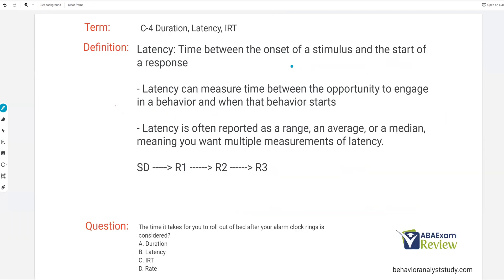Now latency and inter-response time. Starting with latency — these are probably the two most complicated continuous measurement procedures, and they're very closely related. They can be a little hard to internalize at first. Latency is the time between the onset of a stimulus — let's call that the SD — and the start of a response. Looking at our diagram, we have an SD, then response one, response two, response three. The time between the onset of that stimulus and the start of the first response is our latency.